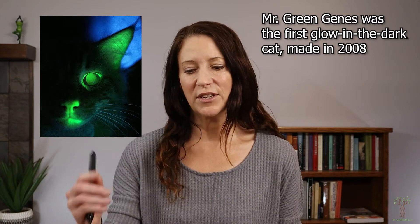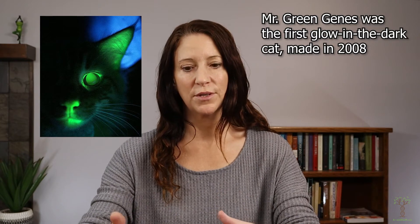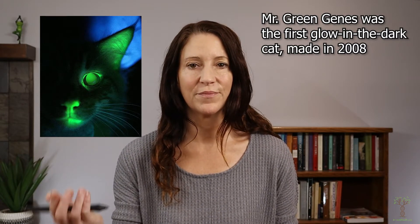Let's look at a few examples of organisms that have been genetically modified. Here we have Mr. Green Jeans. He was the first glow-in-the-dark cat. They take a GFP or green fluorescent protein gene from jellyfish and insert that gene into cells connected to a promoter that will transcribe proteins in the mucous membranes. So whenever mucous membrane-specific proteins are produced, the green fluorescent protein is attached, and we can see Mr. Green Jeans in the dark.